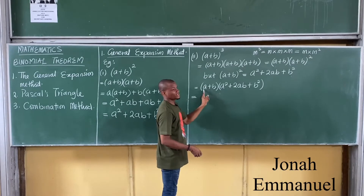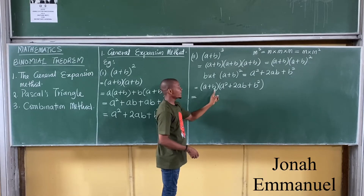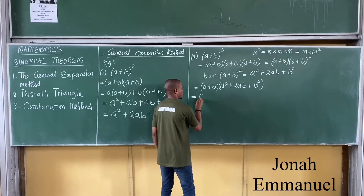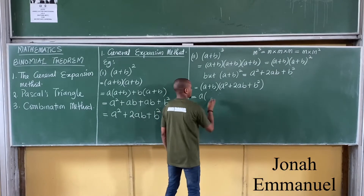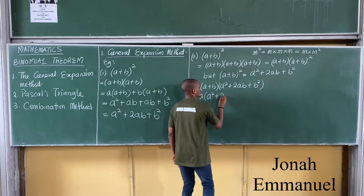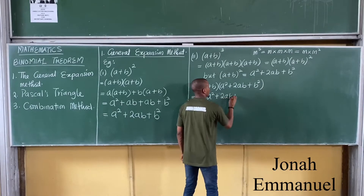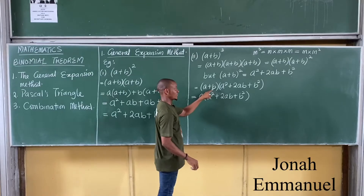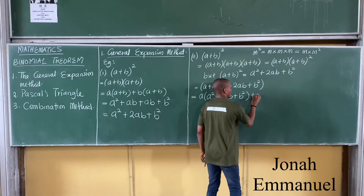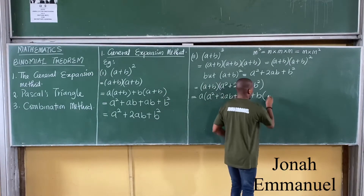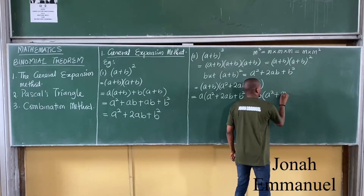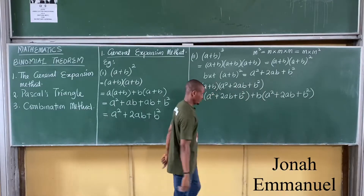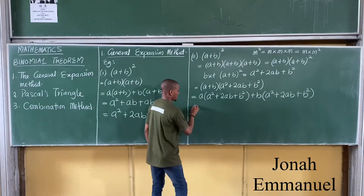So to expand (a + b) cubed, we use each term in the first bracket and multiply all terms in the second bracket. We already know that (a + b) squared equals a squared plus 2ab plus b squared. So the first term here is a — multiply all of that: a squared plus 2ab plus b squared. Then use the second term, plus b, multiplying a squared plus 2ab plus b squared.